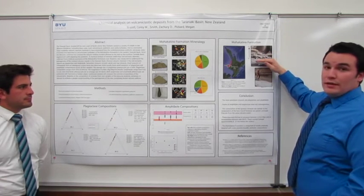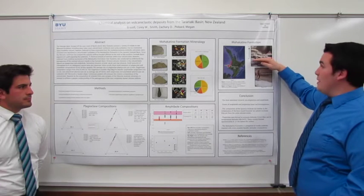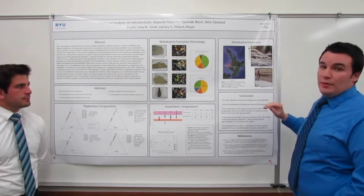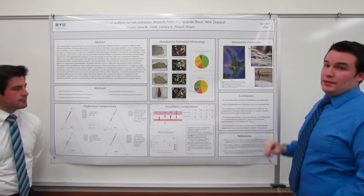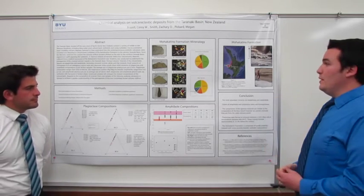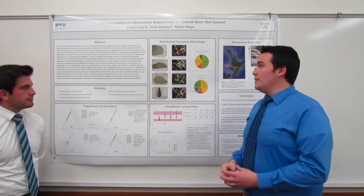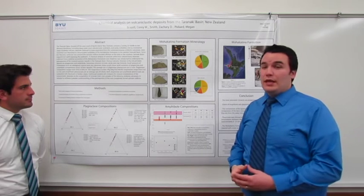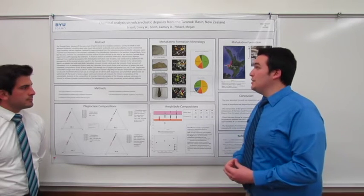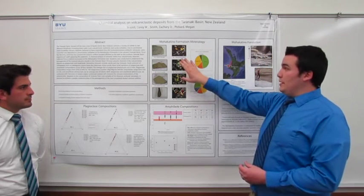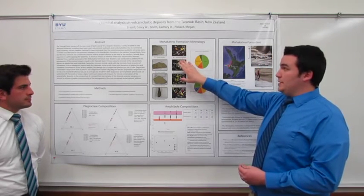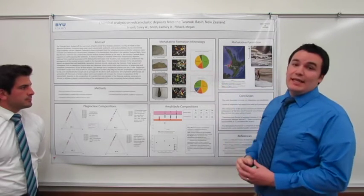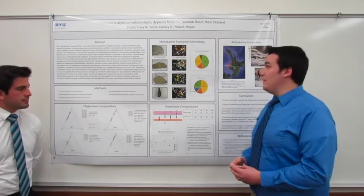Here is a picture of the Mohakatino Formation deposits. Our samples were collected with M1 being on the bottom and M4 being on the top, with M2 and M3 in the middle. Here are pictures of the hand samples collected — they're volcanoclastic in nature. We produced thin sections from those hand samples to analyze the igneous minerals found within them.